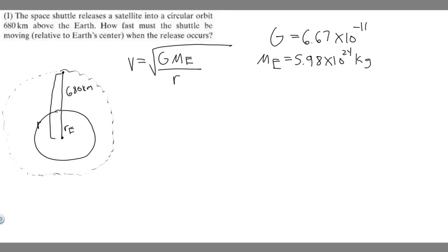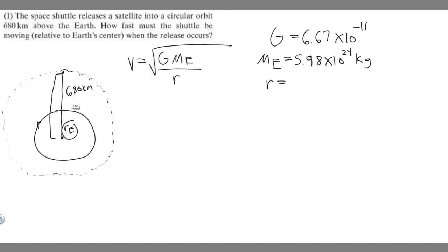The last thing we need is r. R is the total distance from the satellite to the Earth's center. It equals the radius of the Earth plus the height h of the satellite above the surface. So r equals R_e plus h.